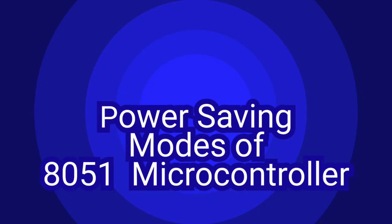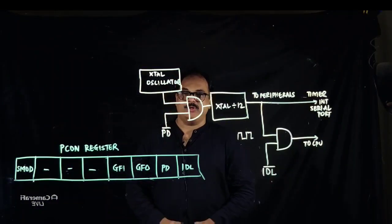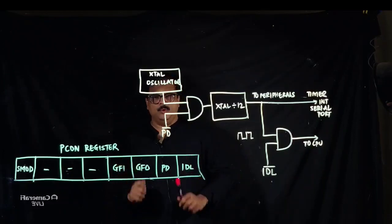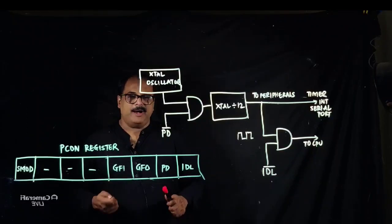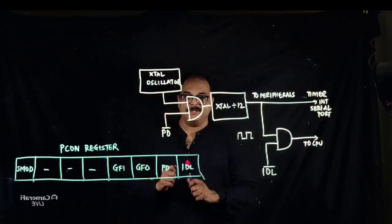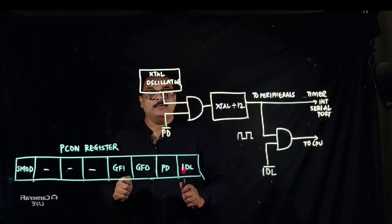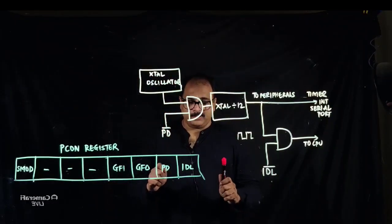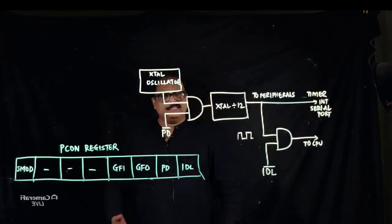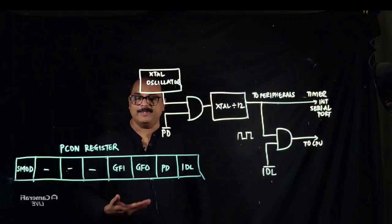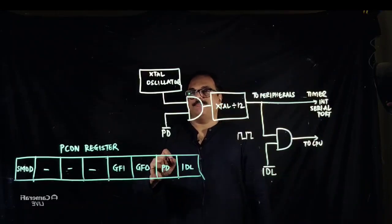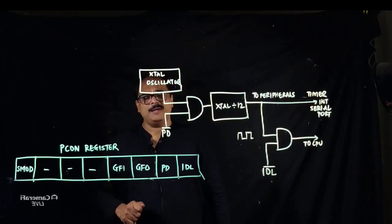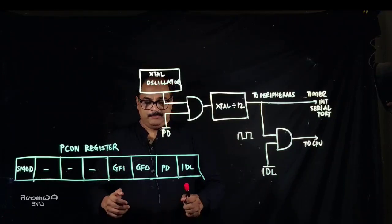Hello everyone, welcome to the career search. In this video we will see the power saving modes of the 8051 microcontroller. Before we go to power saving modes, let us see why exactly it is important to save power in embedded systems. If you take the example of a desktop computer, there is not much need to save power because it is directly connected to the power source. But if you take the example of a laptop, it has got power saving modes.